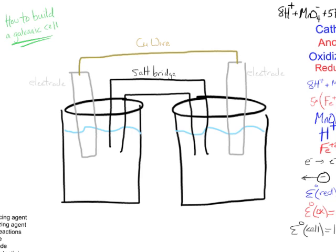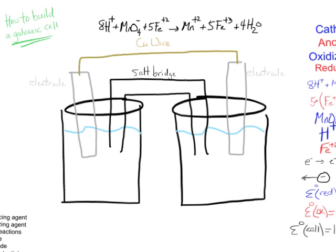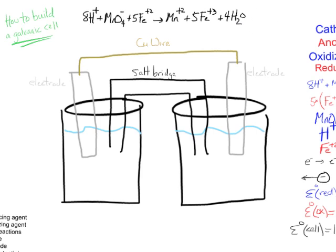If we're going to have a galvanic cell, then we need the fuel for a galvanic cell. In electrochemistry, in redox chemistry, the fuel of a galvanic cell is the oxidation reduction or redox reaction. Here's the reaction that we're going to use as the fuel for our cell. We're going to take H+, and potassium permanganate or permanganate, and iron 2, and we're going to generate manganese 2, iron 3, and some water.